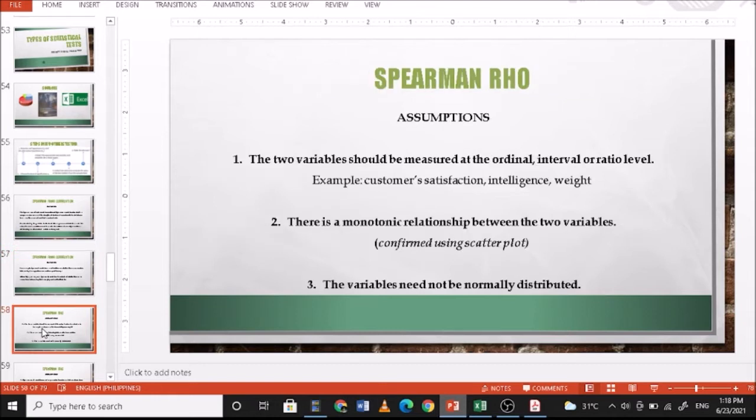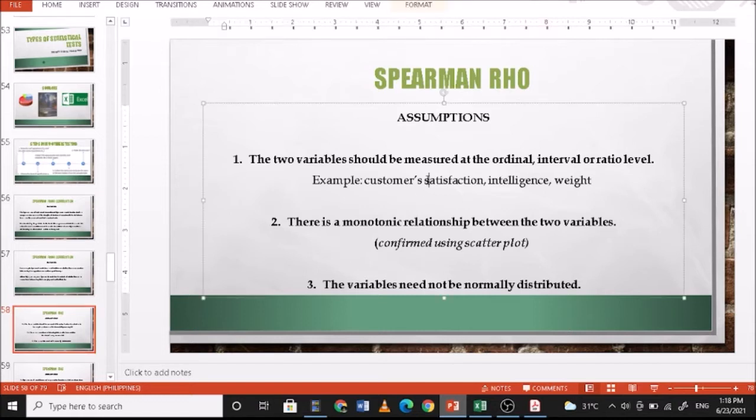Assumptions: The two variables should be measured at the ordinal, interval, or ratio level—either of the three. Examples include ordinal like customer satisfaction or intelligence, and ratio like weight or other continuous values.